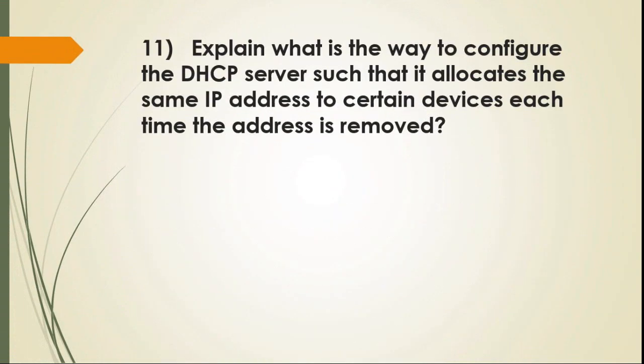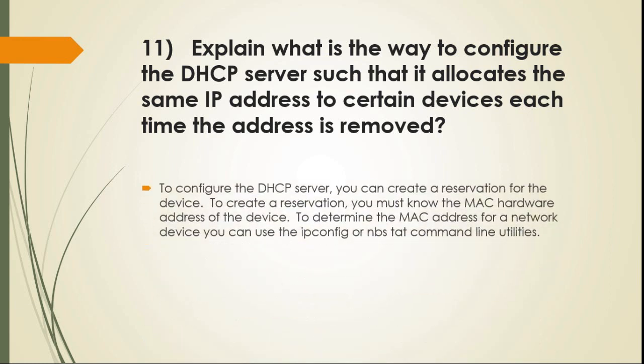Question 11: Explain what is the way to configure the DHCP server such that it allocates the same IP address to certain devices each time. To configure the DHCP server, you can create a reservation for the device. To create a reservation, you must know the MAC hardware address of the device. To determine the MAC address for a network device, you can use the IP protocol configuration or NBTSTAT command line utilities.